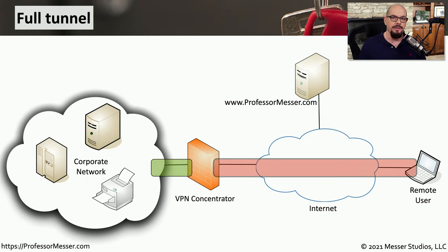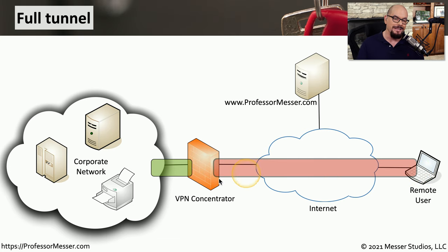A VPN configuration can be set up as a full tunnel or a split tunnel. With a full tunnel, everything that is being transmitted by the remote user is sent to the VPN concentrator on the other side, and the VPN concentrator will then decide where that data happens to go.